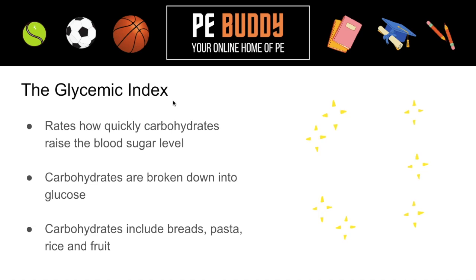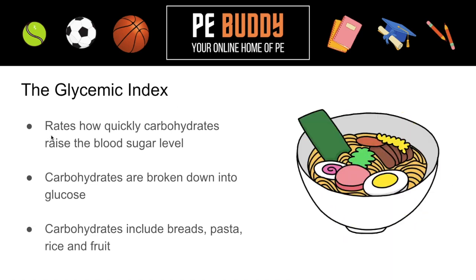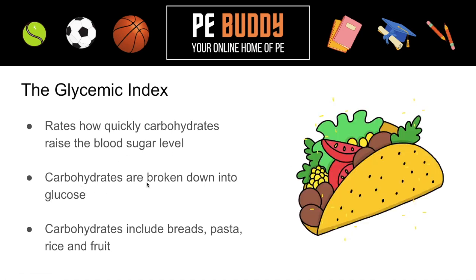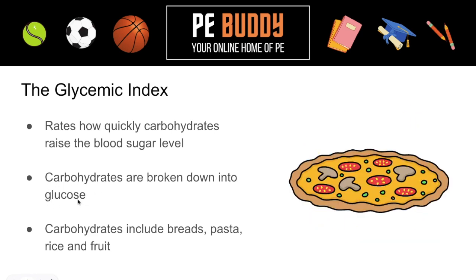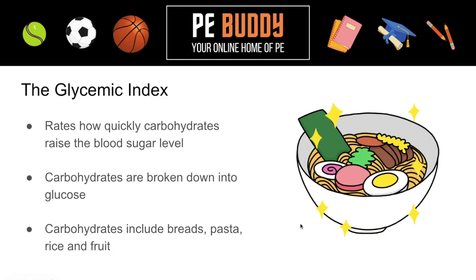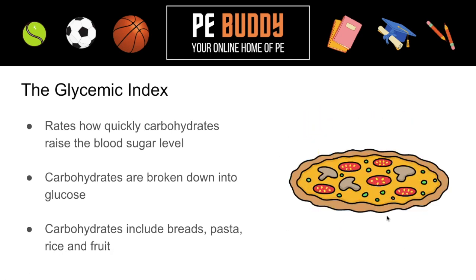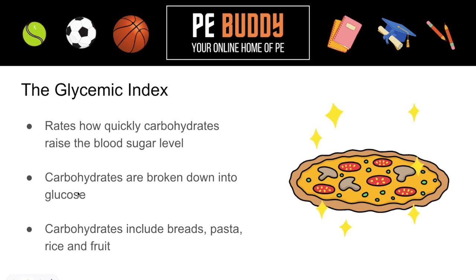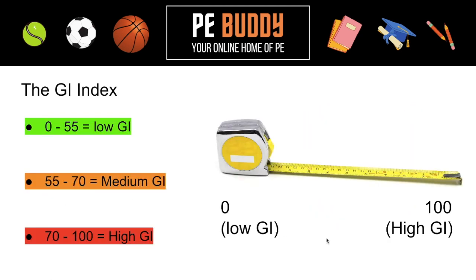Let's kick things off — the glycemic index in a nutshell. It is a scoring system that rates how quickly carbohydrates raise blood sugar levels. Carbohydrates are broken down into glucose, and whenever we eat carbohydrates in things like breads, pasta, rice, and fruit, our stomach and intestinal system breaks them down to extract the useful parts, such as the nutrients and glucose for energy. The GI index is a score from 0 to 100: 0 to 55 is low GI, 55 to 70 is medium GI, and 70 to 100 is high GI.